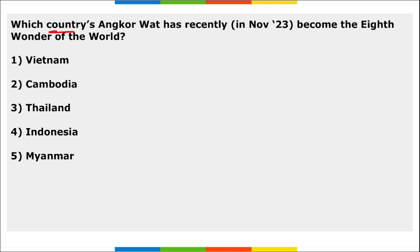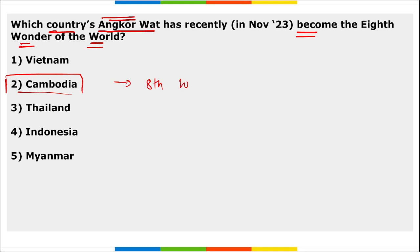Next: which country's Angkor Wat recently became the eighth wonder of the world? It is Cambodia's Angkor Wat. It became the eighth wonder of the world, surpassing Pompeii. This temple was originally dedicated to the Hindu god Vishnu but later transformed into a Buddhist temple.